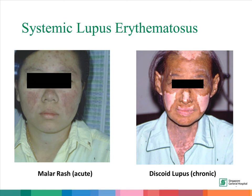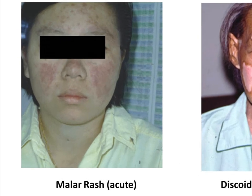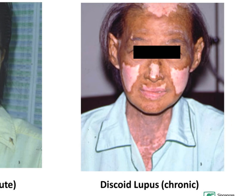In this slide, the patient on your left has the classic malar rash, which is the acute rash seen in SLE. The patient on your right has the chronic discoid lupus rash, where there is central scarring with hypopigmentation and atrophy. Also note the scarring alopecia on the top of the patient's head.